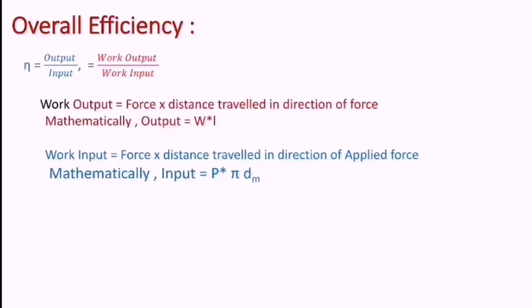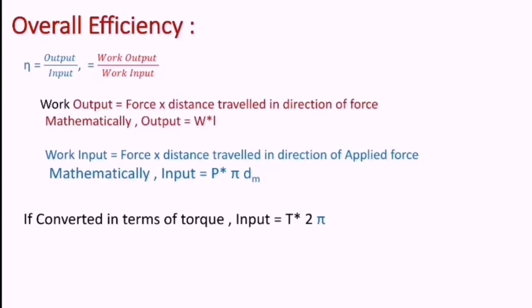Converting the input in terms of torque, input equals torque multiplied by 2π. Substituting this, efficiency equals W multiplied by L divided by T times 2π. The value T here is the total torque — that is, the torque required to overcome friction between the screw and the torque required to overcome friction between the cup and the collar. So T equals Ts plus Tc.